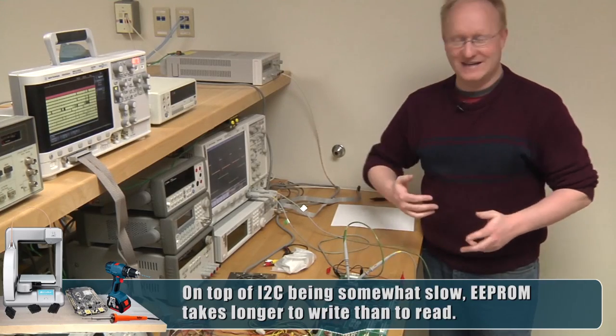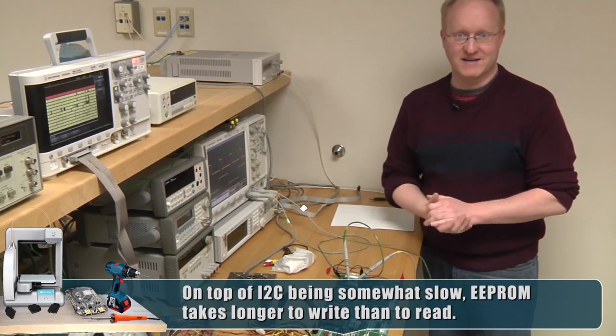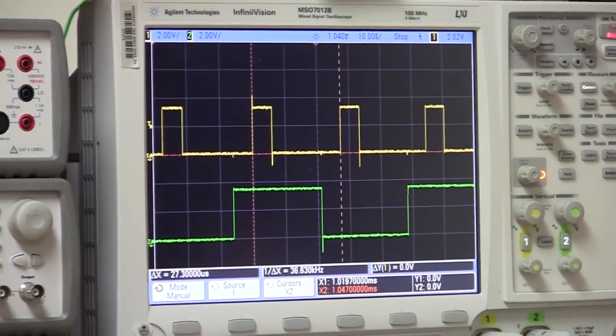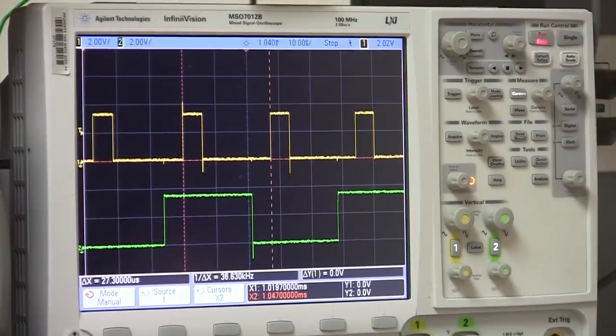Therefore, if you try to read from it immediately, it either won't be in the right state or you won't get the right data back. So that's another thing scopes are good for, basically seeing what kind of actual timing is going on in your system.